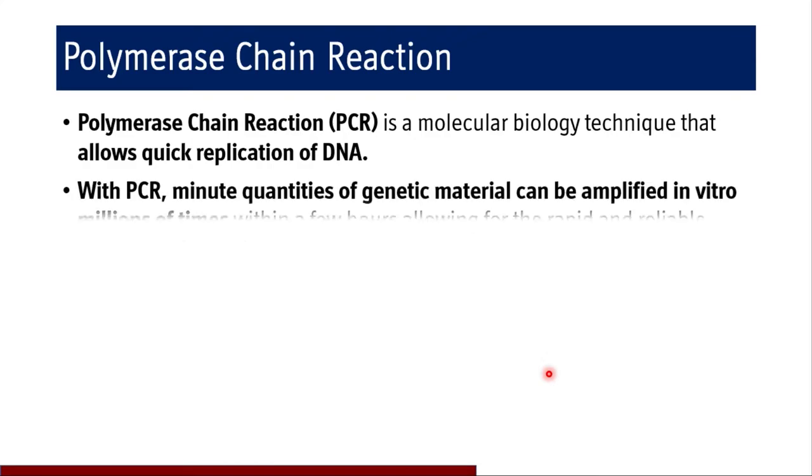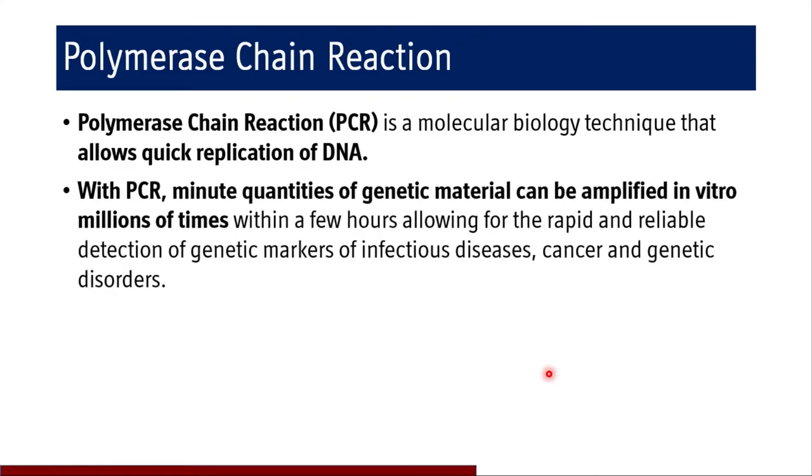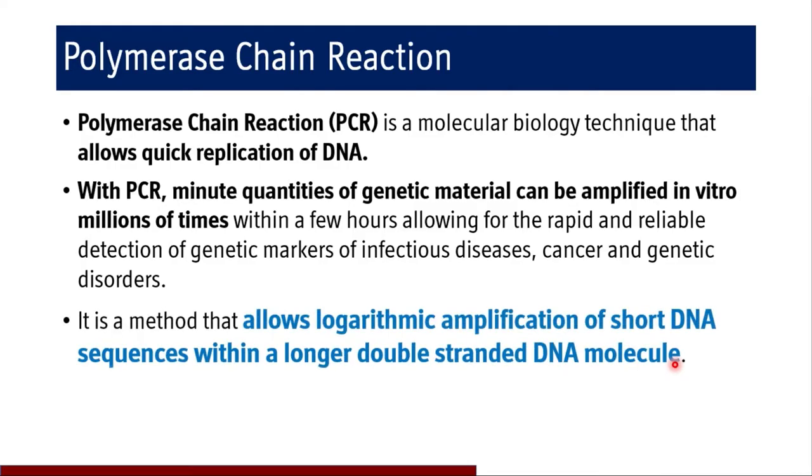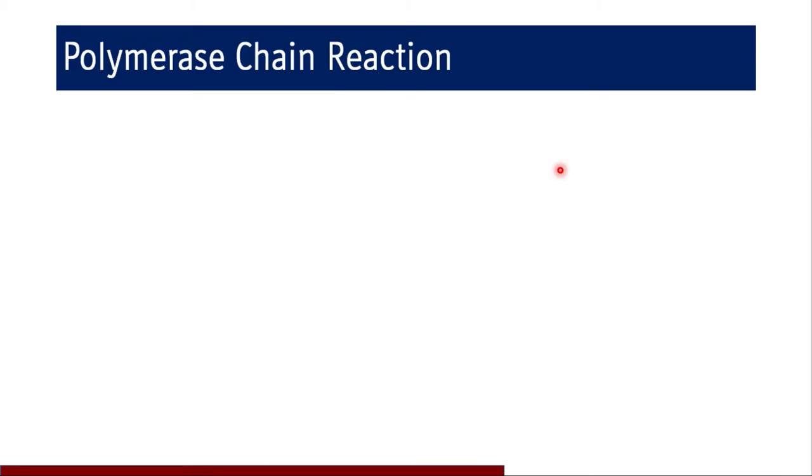The polymerase chain reaction is a molecular biology technique that allows quick replication of DNA. With PCR, minute quantities of genetic material can be amplified in vitro millions of times within a few hours, allowing for rapid and reliable detection of genetic markers of infectious diseases, cancers, or genetic disorders. It is a method that allows logarithmic amplification of short DNA sequences within a longer double-stranded DNA molecule.